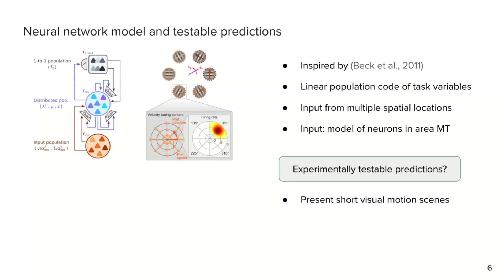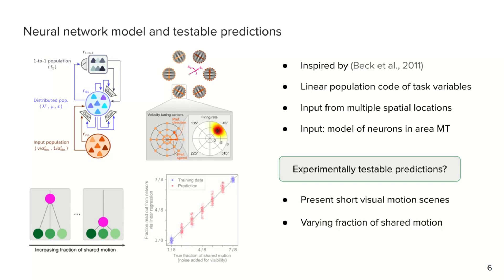We propose an experiment where short motion scenes are presented to an animal. Like the flock of birds, different input locations share a global motion component while also maintaining individual motion. Different trials feature a varying fraction of shared motion. Then, our model predicts that the fraction of shared motion can be read out linearly from the network activity by training a linear regression model.